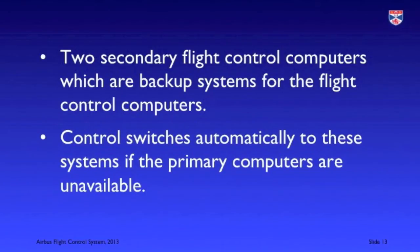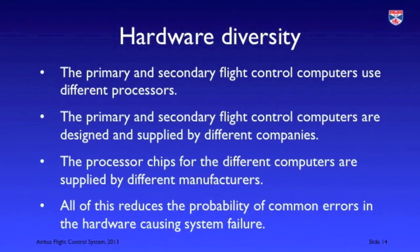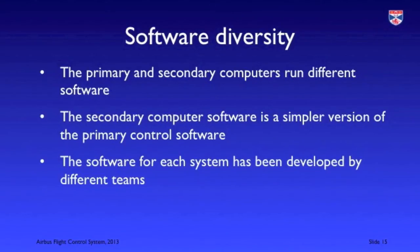As well as these three primary computers, there are two secondary computers. Control switches to these secondary computers if the primary computers are unavailable, but they have a simpler functionality concerned simply with ensuring that the aircraft remains flyable by the pilot. The system makes extensive use of software and hardware diversity — the primary and secondary systems use chipsets from different manufacturers, so that in the event of a fabrication failure this is not replicated across all of the computers. The software in the secondary systems is less complex than in the primary systems but provides essential functionality, and can be more extensively validated because of its lower complexity.